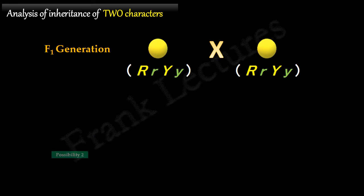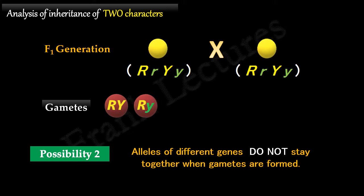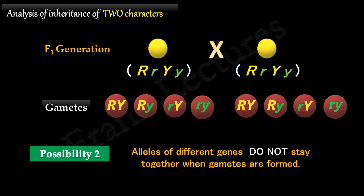The second possibility states that alleles of different genes do not stay together when gametes are formed — in other words, alleles of different genes behave independently of each other. Each allele for a character can pair with any of the alleles for the second character. For example, the allele responsible for round seed shape can pair with the allele for yellow seed color as well as green seed color. Similarly, alleles for these two characters can pair with alleles for yellow or green seed color. So there are four possible combinations of alleles for these two characters, or four types of gametes. Since both the male and female plants of the F1 generation have the same genotype, both will produce the same types of gametes.